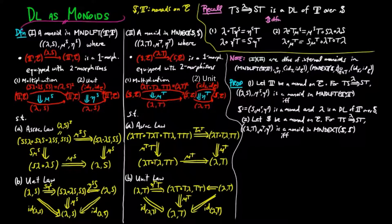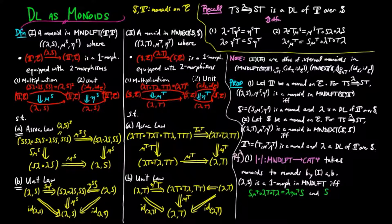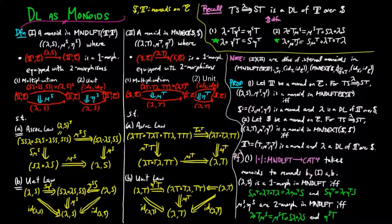For the proof of one, observe that the forgetful functor realizes S, mu S, eta S as a monad on E, by taking the diagrams in 1A and B to the axioms for a monad on E. Then, we have shown that lambda S is a one-morphism in monad lifts if and only if the following equations hold, which correspond to half the axioms of a distributive law above. And we also have shown that mu S, eta S are two-morphisms in monad lifts if and only if the other two axioms for a distributive law hold. This then shows the equivalence in 1.